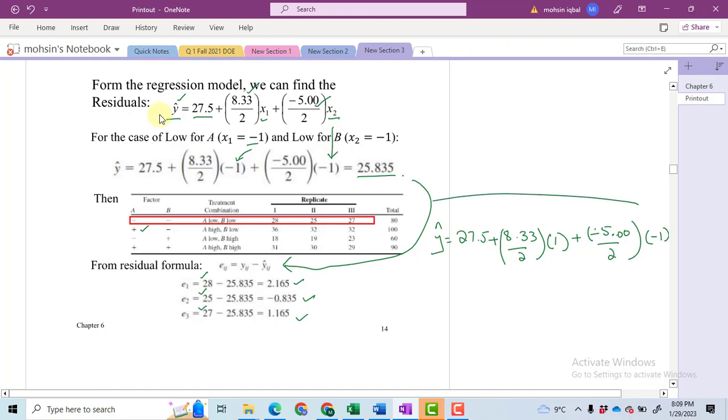Why minus 1? Because we have B at low. So you will get some value of y hat for this second treatment, and then you will have to repeat the same steps.